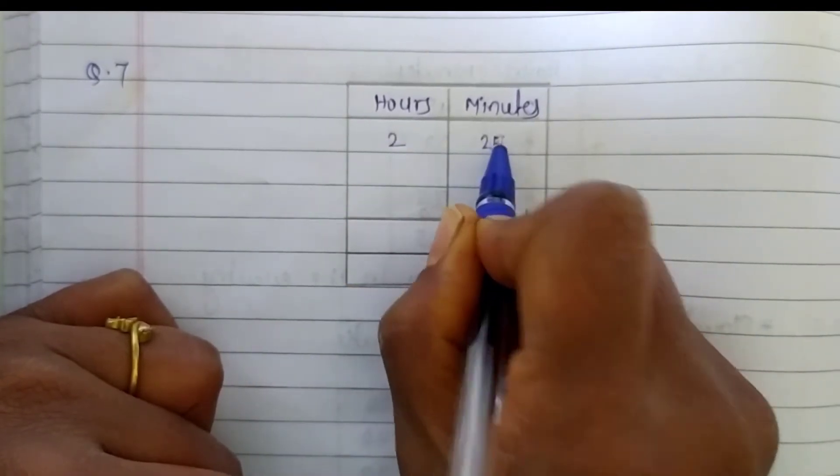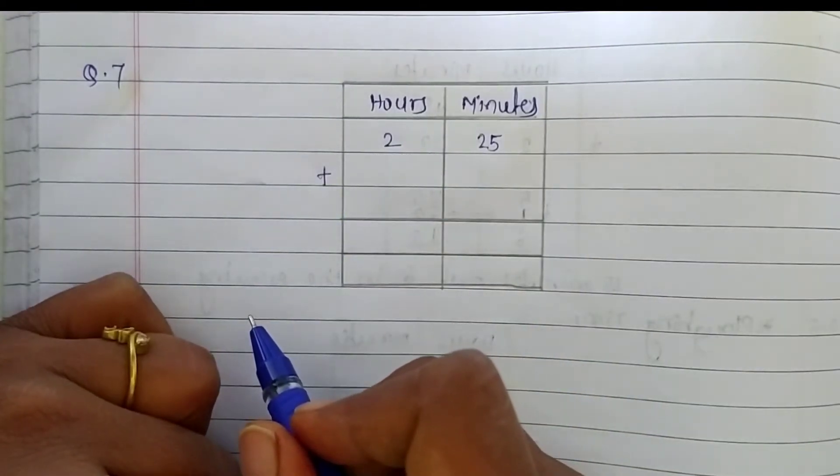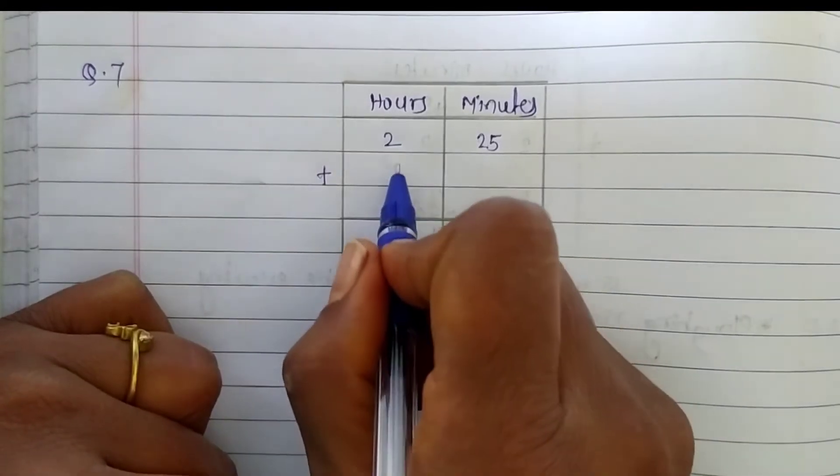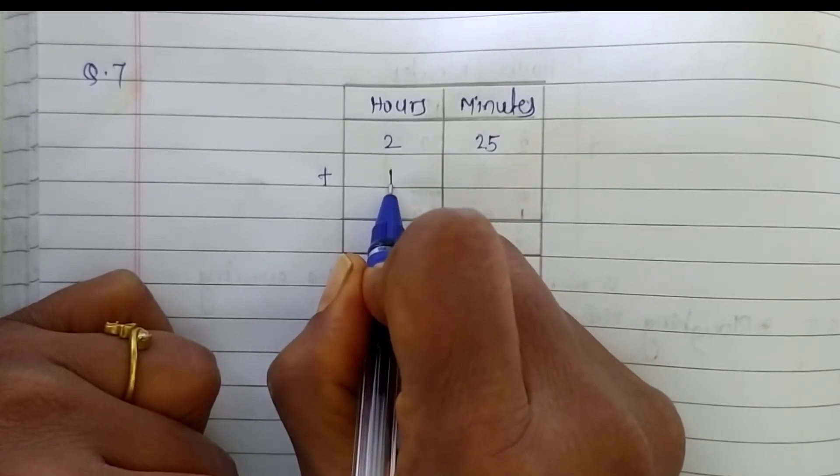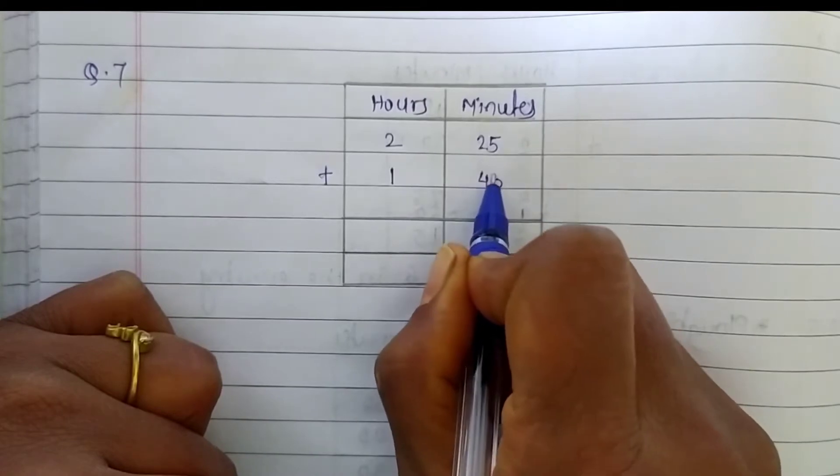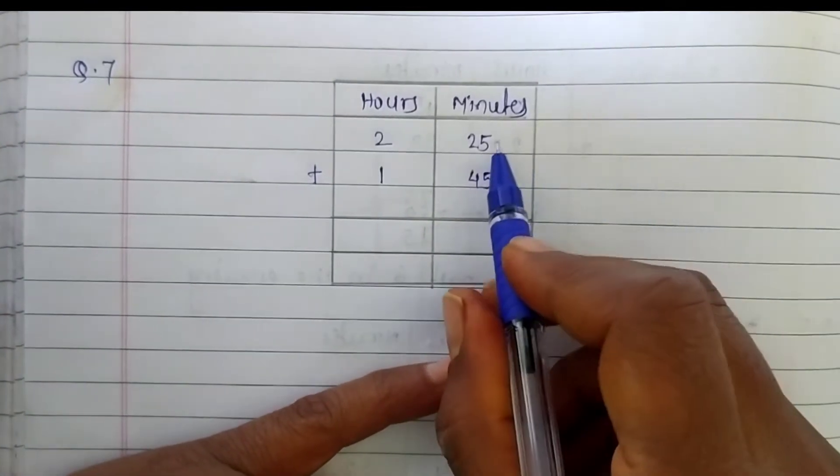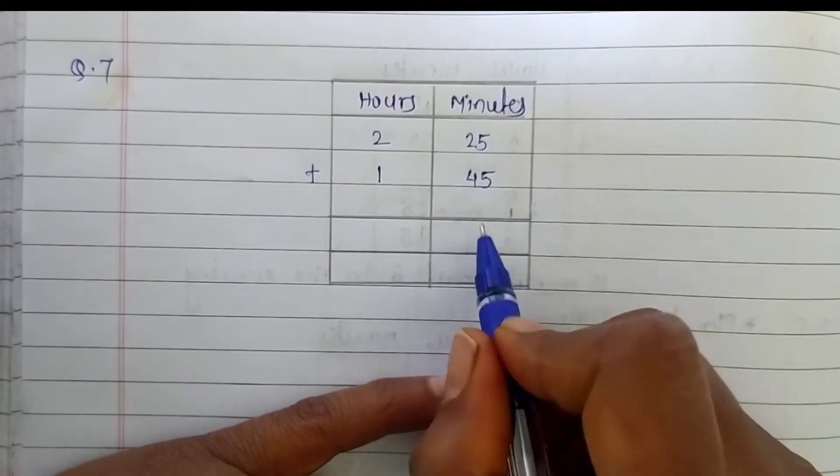Plus, in the afternoon, there are 1 hour and 45 minutes. In hours column, write here 1 and here in minutes column, write 45. Now add this, 5 plus 5, it's 10. 1 is carried forward.